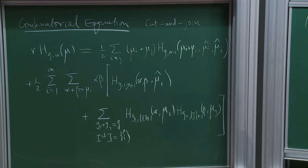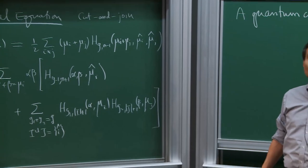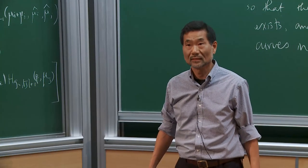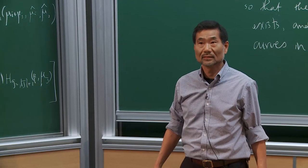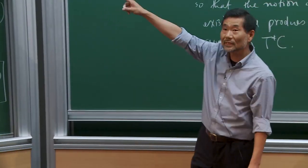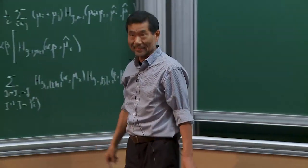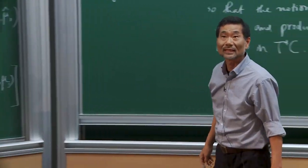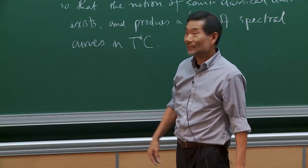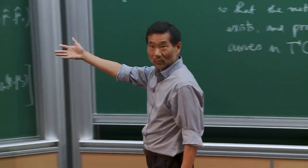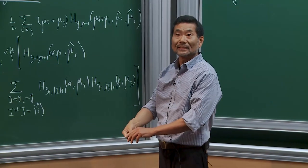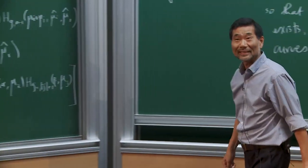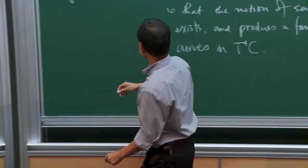The number is normalized by dividing by the automorphism group, so the Hurwitz numbers are rational numbers. With this normalization the formula holds. The conditions are g greater than or equal to 0 and n greater than or equal to 1. From the computational point of view, only a computer program works because you can reduce the size of mu on the right-hand side.